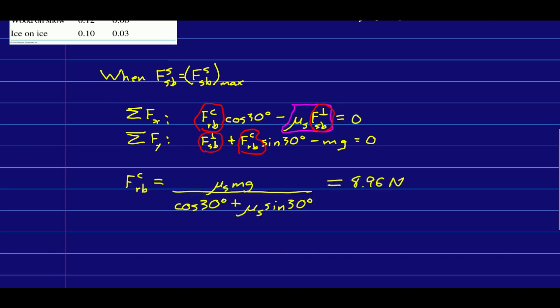So solving this pair of equations for the magnitude of the force by the rope, you should come up with something like this. And putting in the numbers, I got 8.96 newtons.